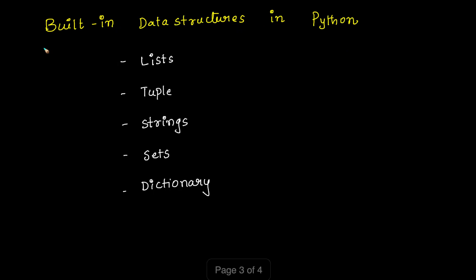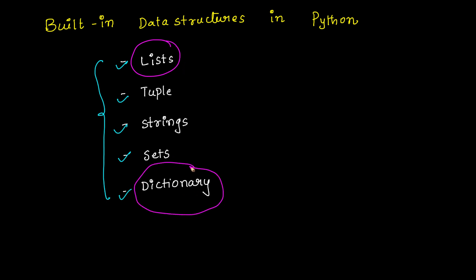The next module is inbuilt data structures in Python. Majorly, we have five different types: list, tuple, strings, sets, and dictionary. In real-time, we use list and dictionary most extensively. For each data structure, we need to learn how to create, add, update, and delete elements, as well as what operations can be performed on them.